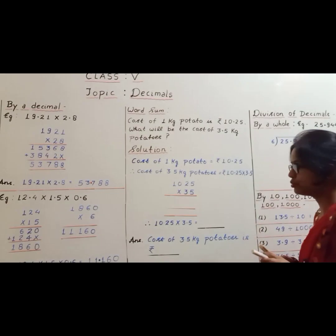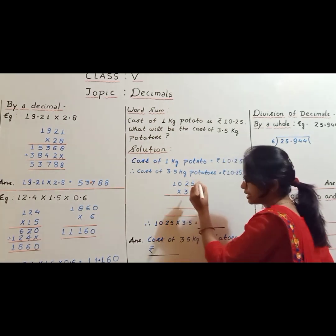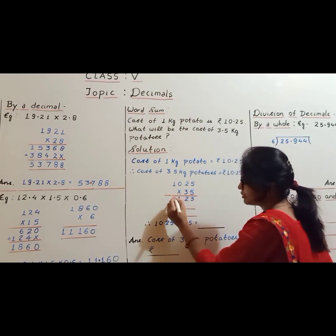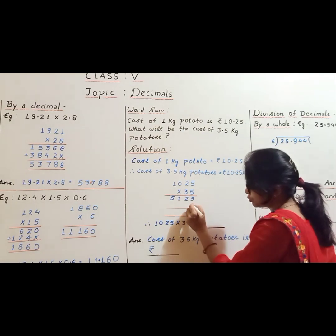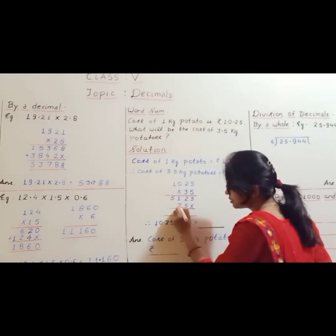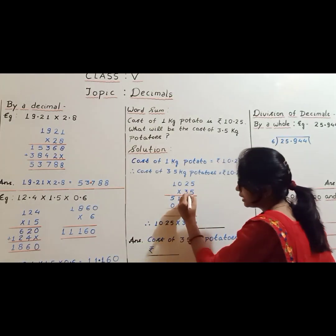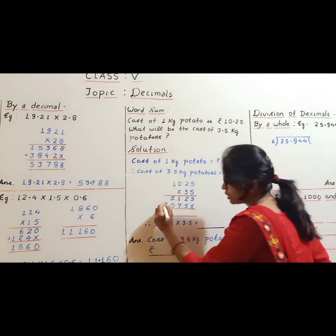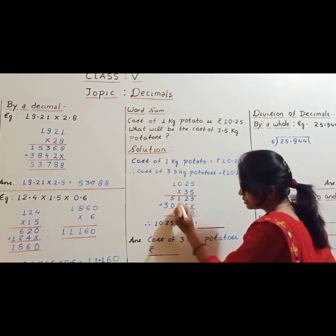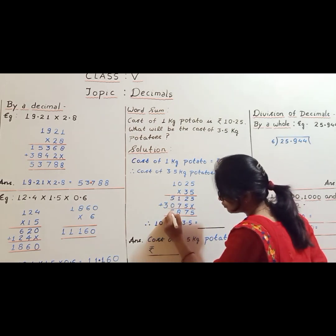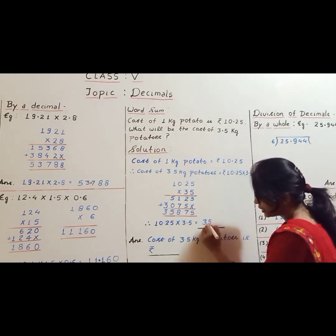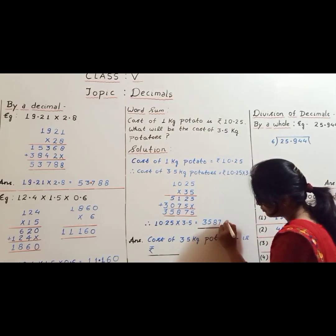Now multiply: 5 fives are 25 carry 2, 5 twos are 10 plus 2 is 12 carry 1, 5 zeros are 0 plus 1 is 1, 5 ones are 5. Next row: put a cross, 3 fives are 15 carry 1, 3 twos are 6 plus 1 is 7, 3 zeros are 0, 3 ones are 3. Now add the rows: 5 plus 0 is 5, 2 plus 5 is 7, 7 plus 1 is 8, 5 plus 0 is 5, and 3. So the product is 35875.